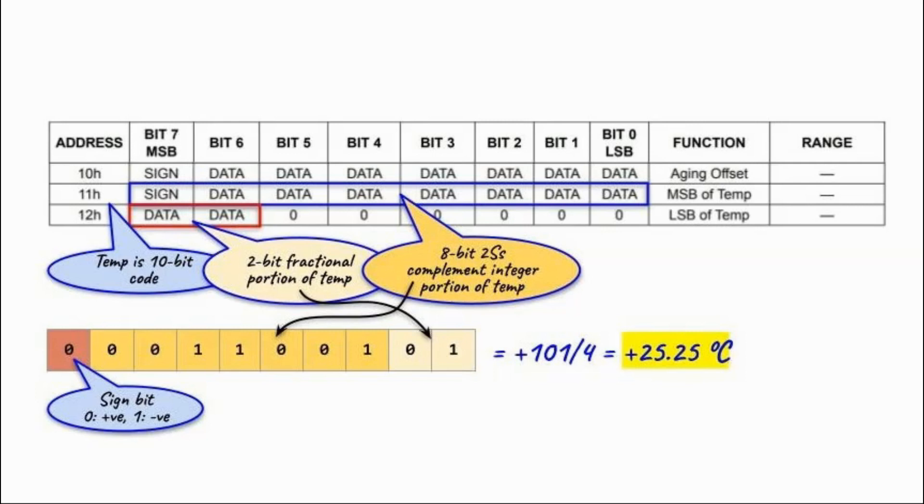At location 11, we have the most significant byte of the temperature. At location 12, we have the least significant byte. The most significant byte is an 8-bit 2's complement, where the most significant bit is the sign bit, while the 7 bits here give the integer value of temperature.